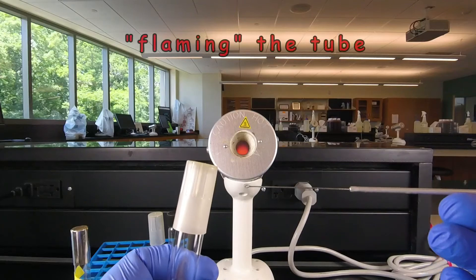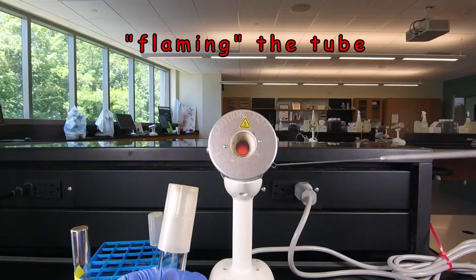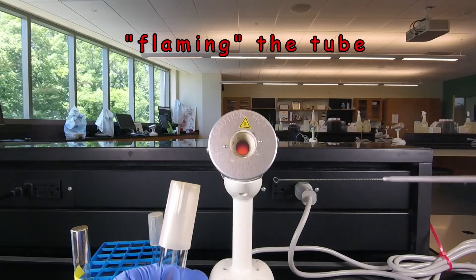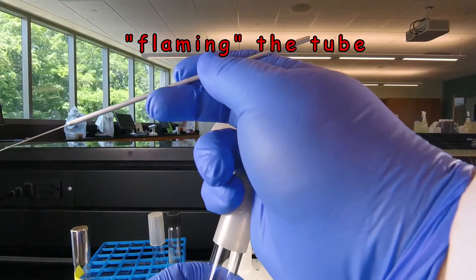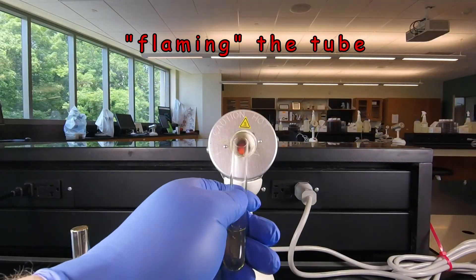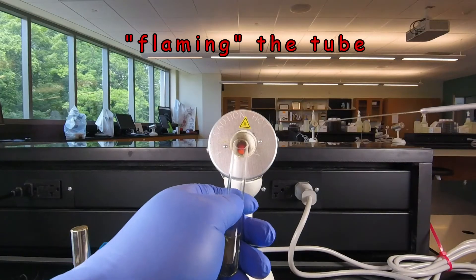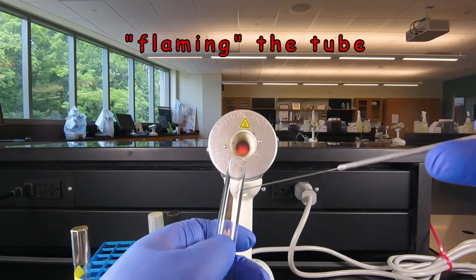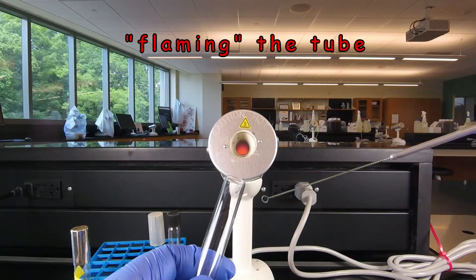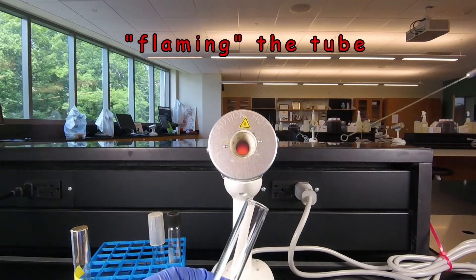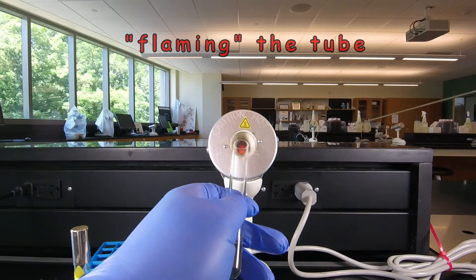Now when we're doing this for real once we remove the cap we do what's called flaming the tube. This goes back to when we used to use Bunsen burners for aseptic technique and we put the tube in a flame. What we do after we remove the cap is put the opening of the tube against the Bacto incinerator and leave it there for three seconds. What that does is temporarily heat the glass in the air, warm air rises and microorganisms can't fall in from the air as easily. Then we take out the bacteria or put in the bacteria or do whatever procedure we're doing. And then before we put the cap on we flame the tube again.